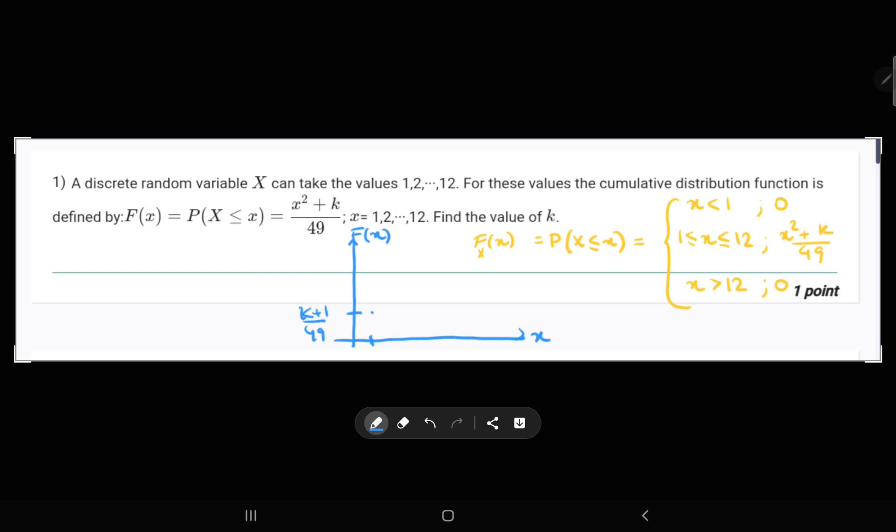And for x equal to 12, the highest value, we will get (144 + k)/49. This graph has no use, but it is just to clarify what a graph in reality would be. It's a quadratic equation, a graph would be like this.